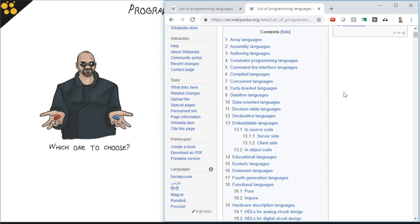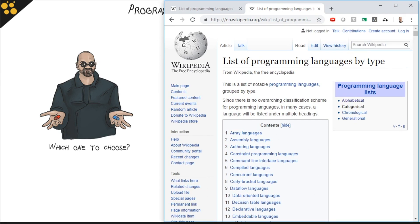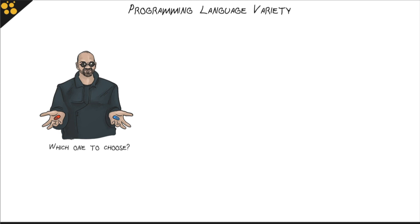We've got array languages, compiled languages, data flow languages, embedded languages which break down into a whole bunch of different kinds. How do we make sense of all of these different choices, all of these different programming languages that are out there? Well, in this video I would like to break them down into a few general categories for you.